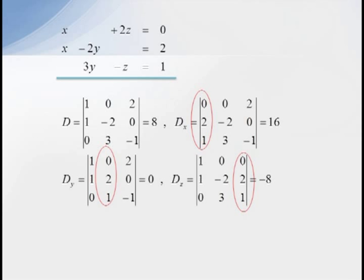To find X, we need to replace the column corresponding to the coefficients of X with our constant column zero, two, one. Computing this determinant, you'll see that DX equals 16.